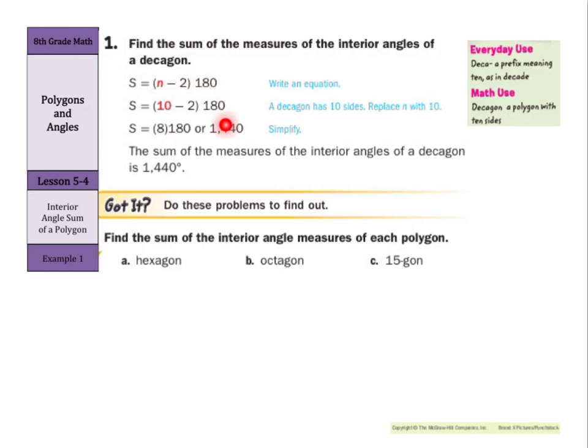10 minus 2 was 8 times 180 is 1,440 degrees. So the sum of measures of the interior angles of a decagon is 1,440 degrees. And if you had a decagon in front of you, you would see eight triangles if you tried to draw them.